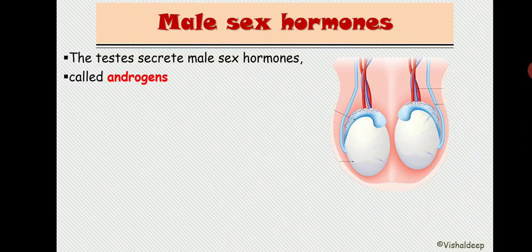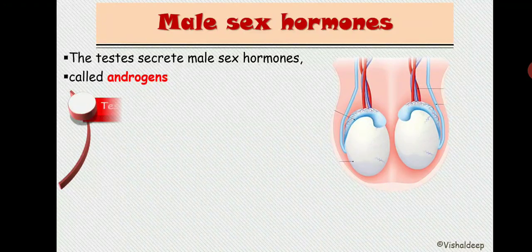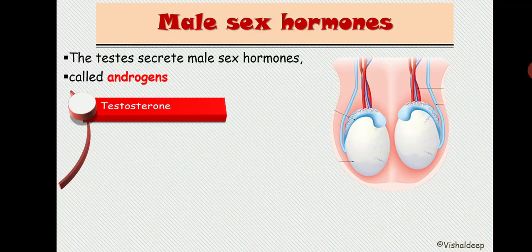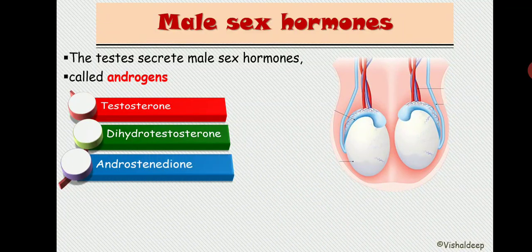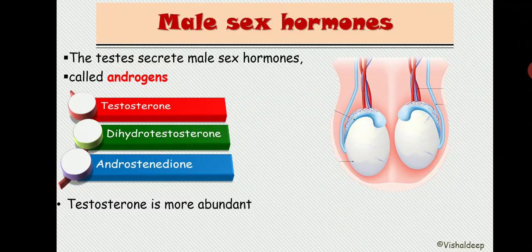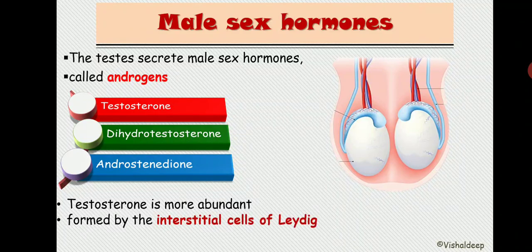The list of androgens includes testosterone, its active form dihydrotestosterone, and androstenedione. Testosterone is the most abundant and is formed by the interstitial cells, also known as Leydig cells.